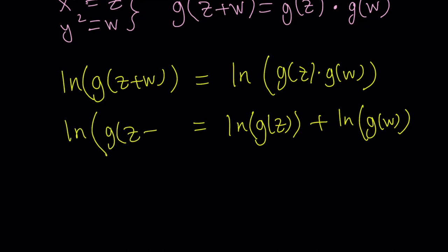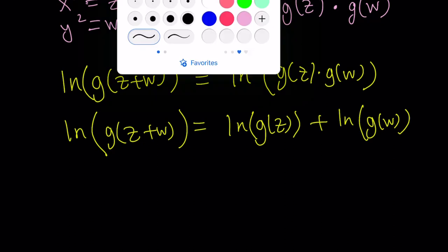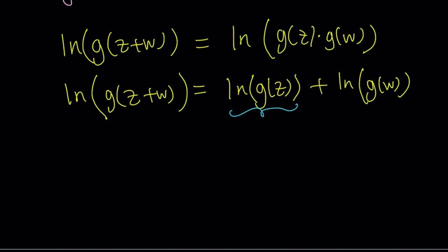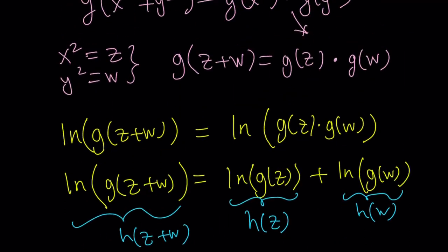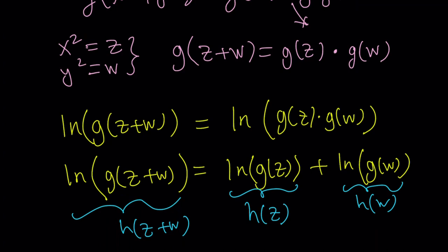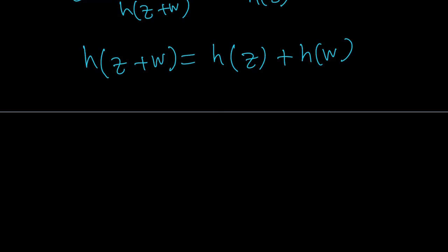I'm going to use substitution again. I want to get rid of the ln. I could use e to the power, but that would just bring me back to the g. So I'm going to call this function h of z. ln g of z is called h of z. Then this becomes h of w, and this becomes h of z plus w. From here, we get something real cool. I hope you recognize this function now. h turns the sum into a sum. This happens when you have a linear function. That is Cauchy's functional equation.